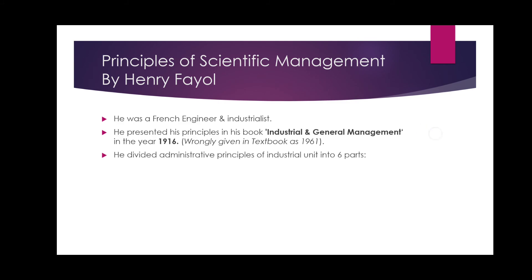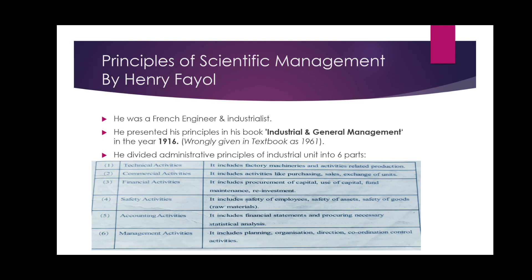Principles of scientific management by Henry Fayol — this is an image from the textbook, which is just for learning. These are six principles given by Henry Fayol, which are administrative principles divided into six parts. Remember, these are administrative principles. One important point to note: in the second point I mentioned in brackets — in some old textbook publications, you might find the year the book was written listed as 1961, but that is wrong. The correct year is 1916 — the book is 'Industrial and General Management' written in 1916.